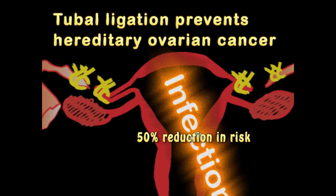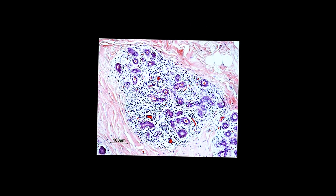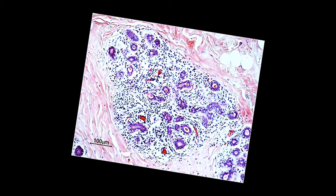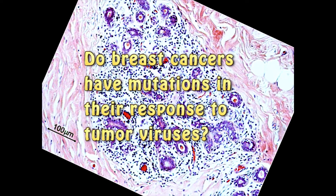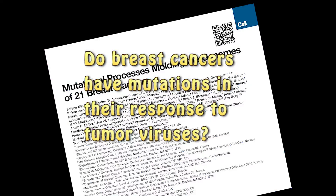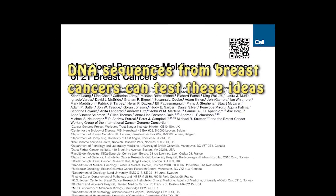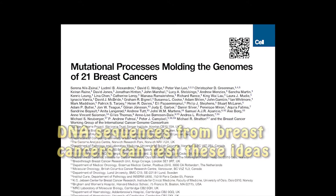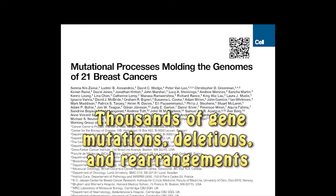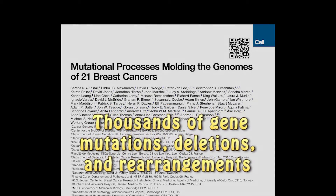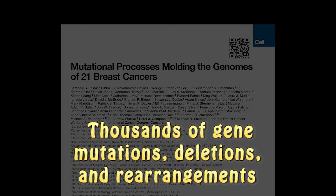I wondered whether some people are more likely to get cancer from infections if they have mutations in their immune responses. This might help explain viral associations with breast cancers that are so contradictory. Fortunately, some breast cancer genomic sequence data appeared and allowed the testing of this idea. Breast cancer genomes contain thousands of gene mutations, gene deletions, and gene rearrangements.